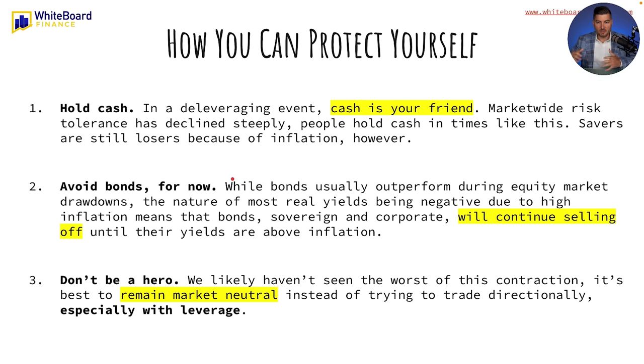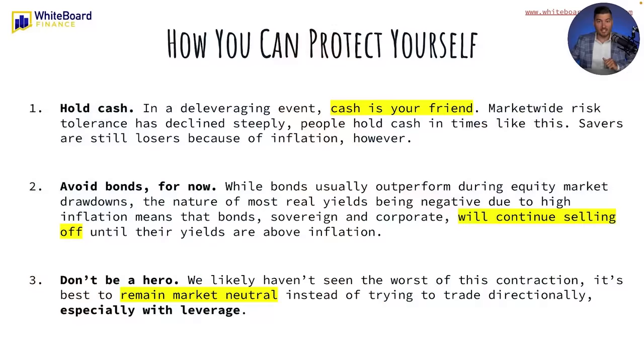So how can you protect yourself? Number one: hold cash. I'm seeing more hedge funds holding cash right now. In a deleveraging event, cash is your friend — cash is king. Market-wide risk tolerance has declined steeply. Savers are still losers because of inflation, however. If you're getting 0.5% in your bank or 0% under your mattress and the cost of everything else is going up 8.6% year over year — which is what the CPI actually is — your purchasing power just got eroded by 8.6 percentage points.